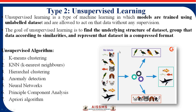Unsupervised learning identifies the structure, pattern, and shape of the unlabeled dataset. For that purpose, different algorithms are used: K-means clustering, K-nearest neighbor, hierarchical clustering, anomaly detection, neural networks, principal component analysis, and the Apriori algorithm. We will discuss all those algorithms in the next session. In summary, unsupervised learning algorithms use unlabeled datasets to find patterns and structure, grouping data into clusters.